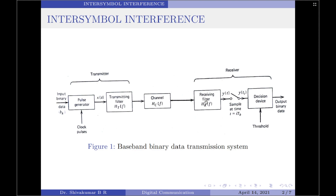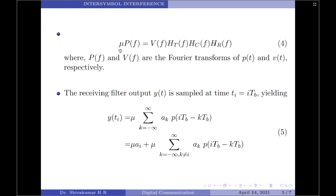Therefore, we can relate the pulse shape at the receiver output to that at the transmitter output in the frequency domain by: μ · P(f) = V(f) · H_T(f) · H_C(f) · H_R(f), where P(f) and V(f) are the Fourier transforms of p(t) and V(t) respectively, and H_T(f), H_C(f), H_R(f) are the transfer functions of the transmitter, the channel, and the receiver respectively.